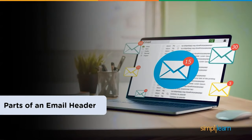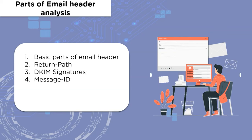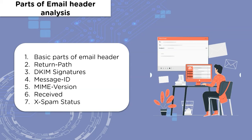Now we will see what different parts are involved during the analysis of an email. First, we'll look at the basic parts that comprise an email header, including different fields: Return Path, DKIM Signature, Message ID, MIME Version, Received field, and the Spam Status field.